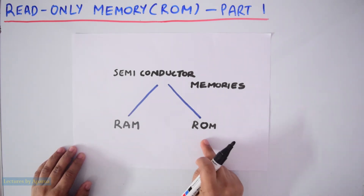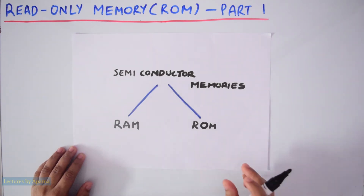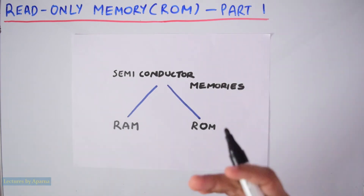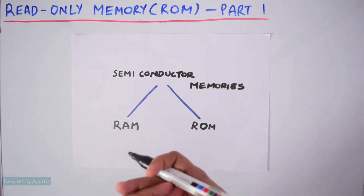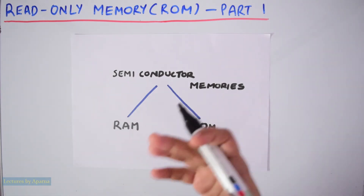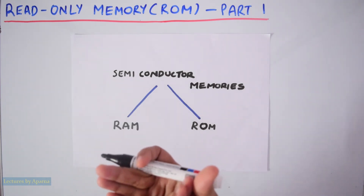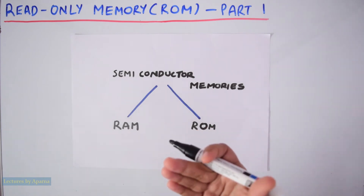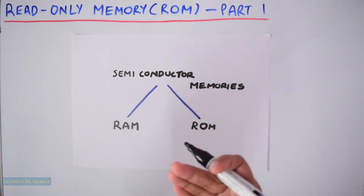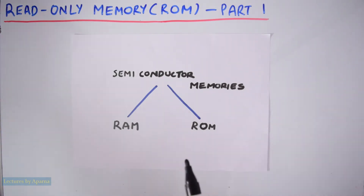Whereas in ROM or read only memory, as the name says, you can only read information from it. This means some binary information will be already stored or embedded in it by the programmer by some hardware procedures. This data that is already there in the memory can be read or retrieved by us anytime, but we cannot write into it. And so this is read only memory or ROM.